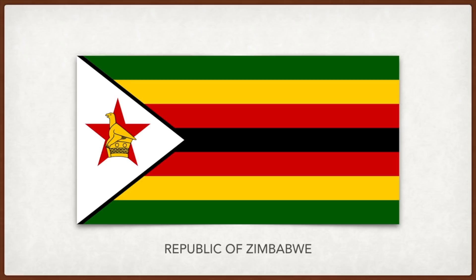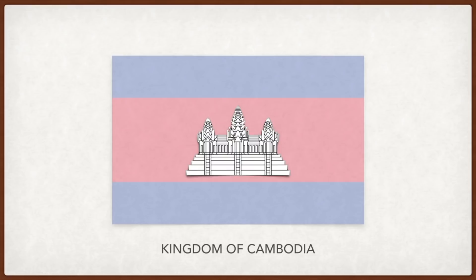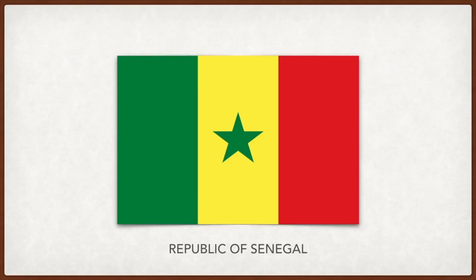Cambodia: the white building in the middle is a temple originally constructed as a Hindu temple to Vishnu but later transformed into a Buddhist temple, representing integrity, justice, and heritage. Red is for bravery and blue is for liberty and brotherhood.